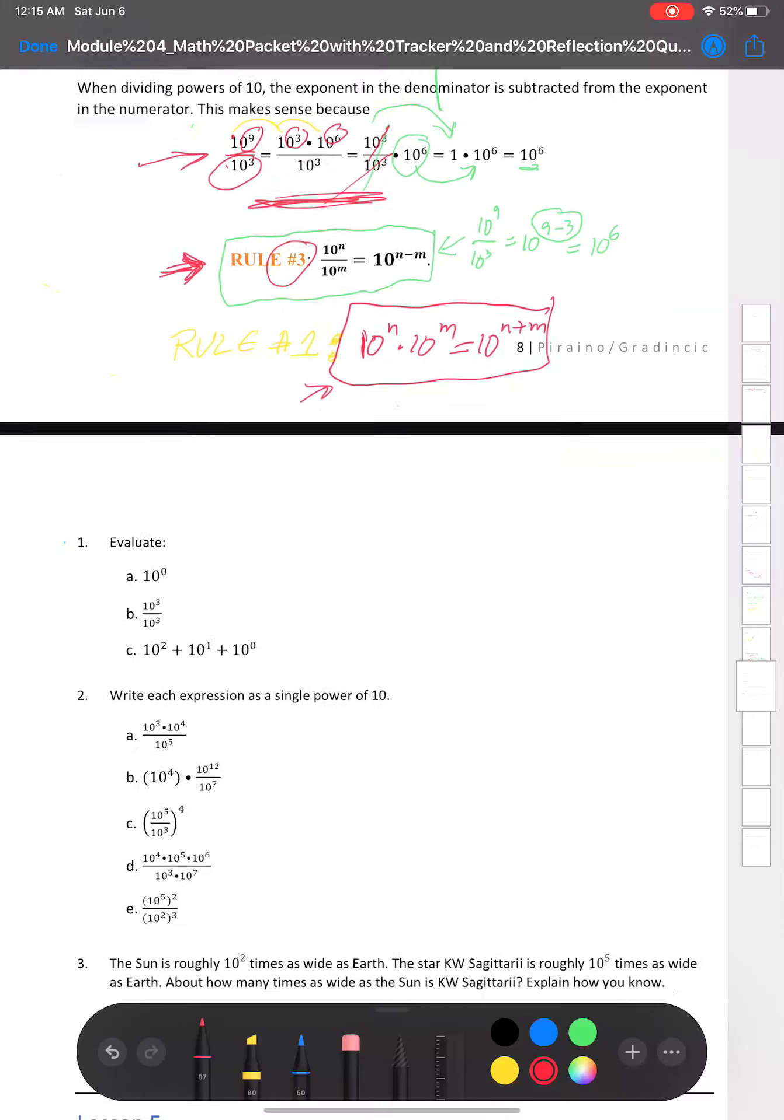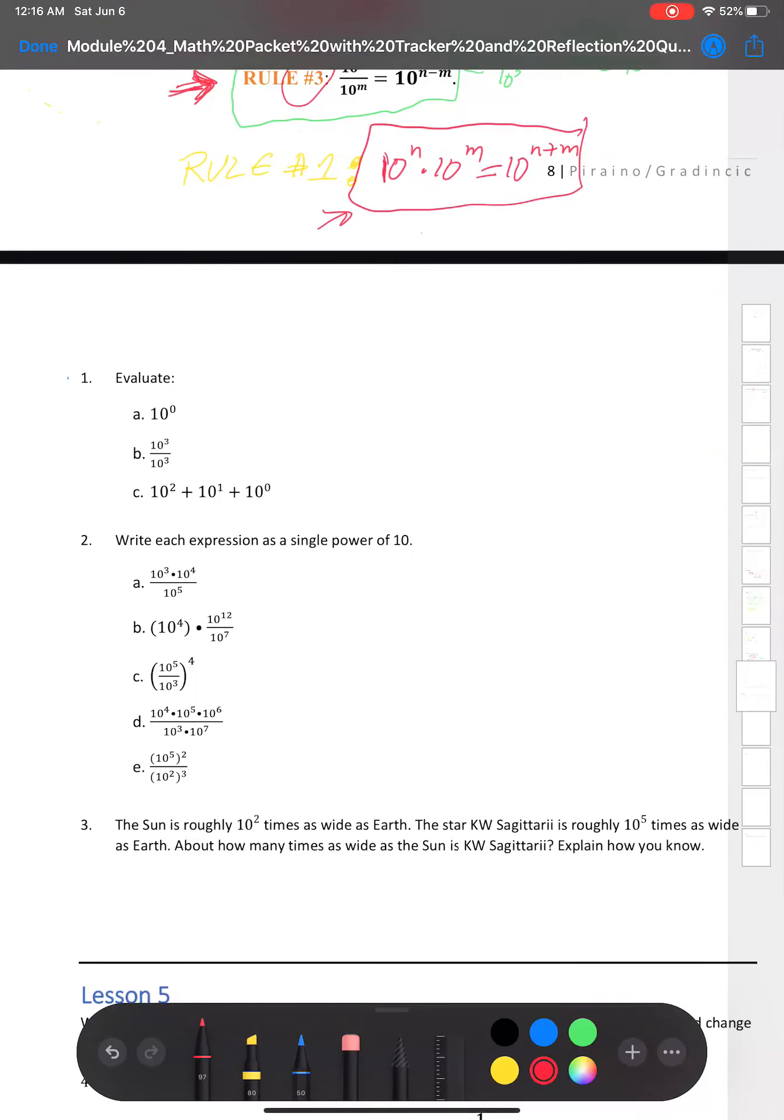So number one, you're going to have one freebie because this is something that we did not learn before, and it's something that actually you just need to remember. There's like a long proof or explanation as to why anything to the zeroth power is equal to one. So for now, I'm not going to go into detail why that is. All you have to know is that any number that you raise to a power of zero is going to be equal to one.